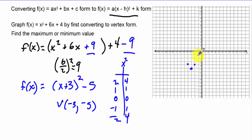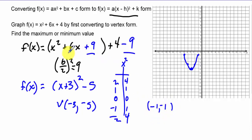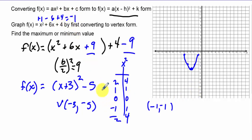Over 1, up 1; over 2, up 4 from the vertex. Checking the point (-1, -1) in the original equation: positive 1 plus 1 minus 6 plus 4 equals -1. It checks out.